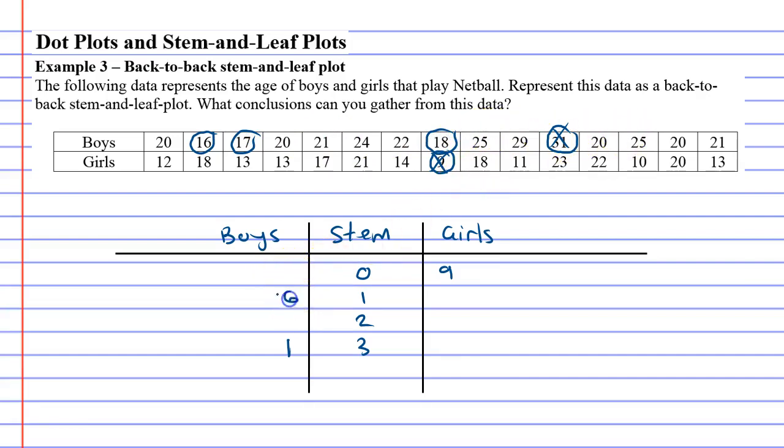So 16, 17, 18, matching with the one. Notice we did them in order but with the boys because they're on the left side we actually go in order from right to left. Okay, so we can cross these off now since we've done them.